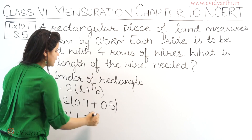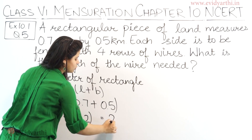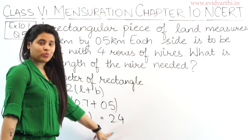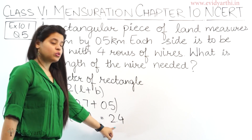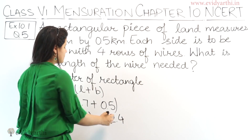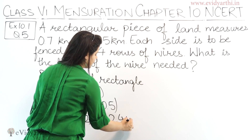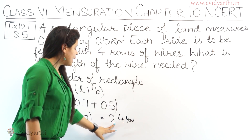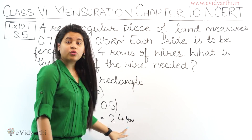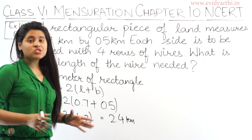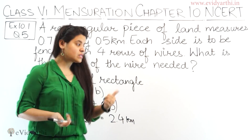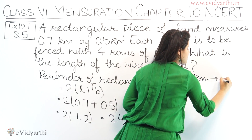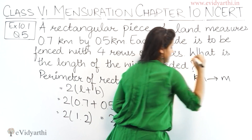Now multiply 2 with 1.2, we get 2.4. Because 12 into 2 is 24, and with the decimal placed correctly, we get 2.4 km. Now the wire length cannot remain in km, so we need to convert this km into meters.